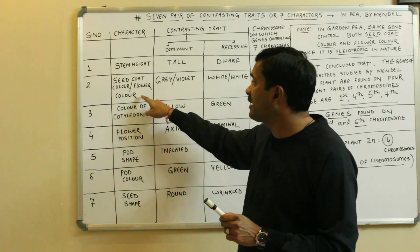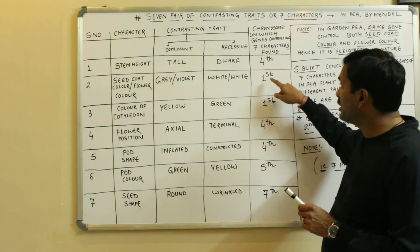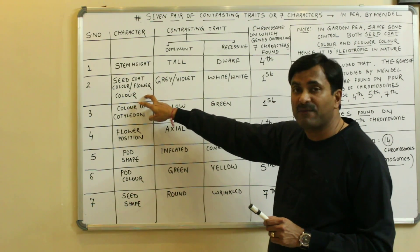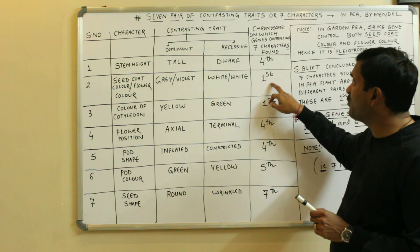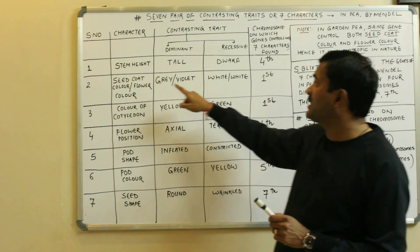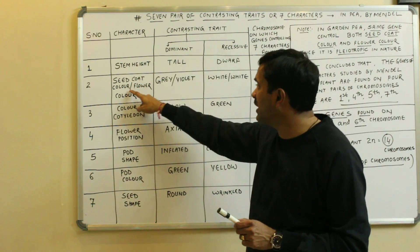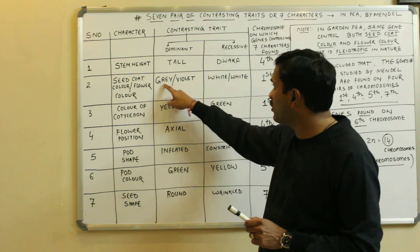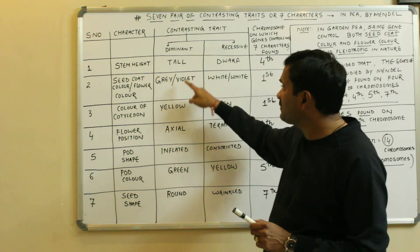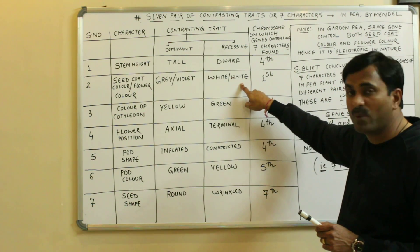The gene controlling seed coat color and flower color is found on chromosome number one. The contrasting trait for seed coat color is gray for the dominant and white for the recessive. For flower color, the dominant trait is violet and the recessive trait is white.